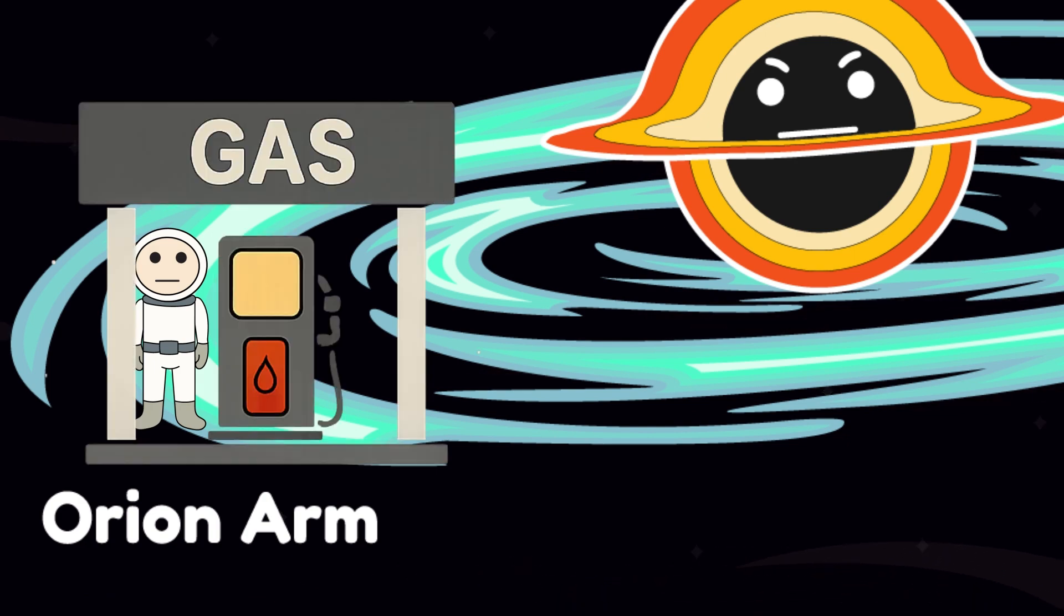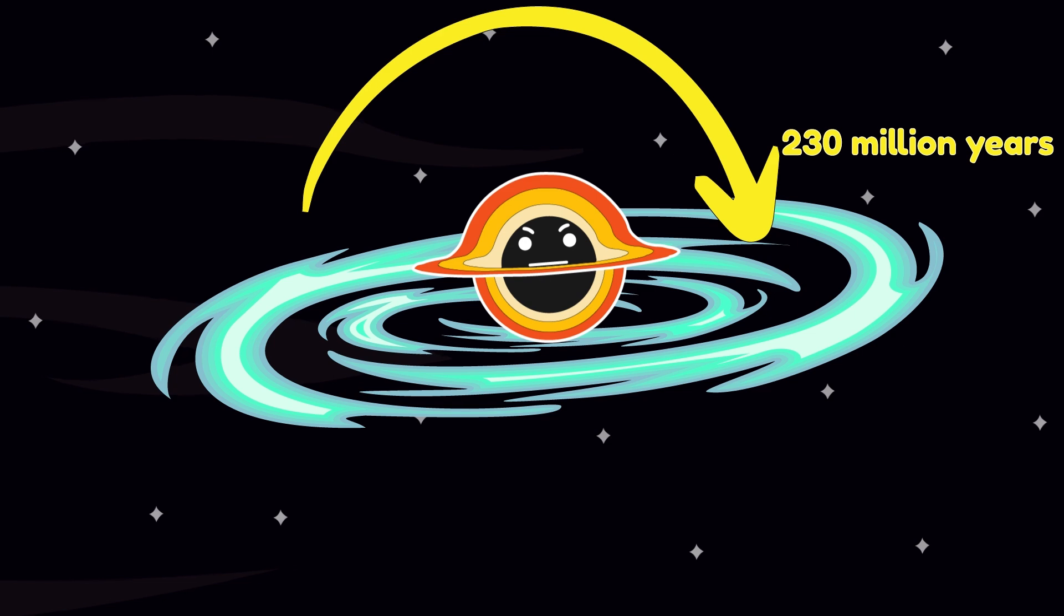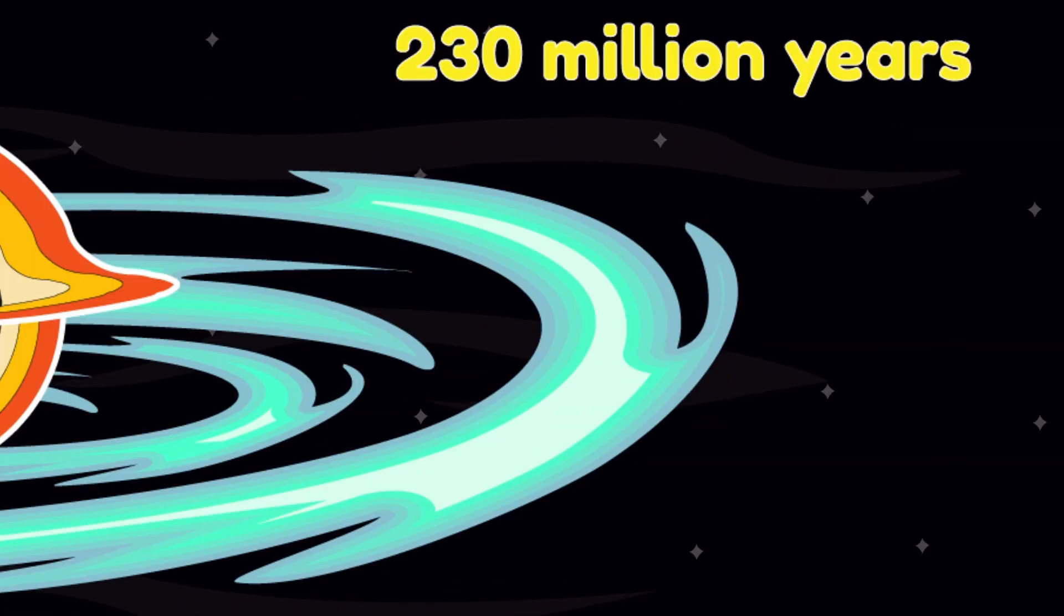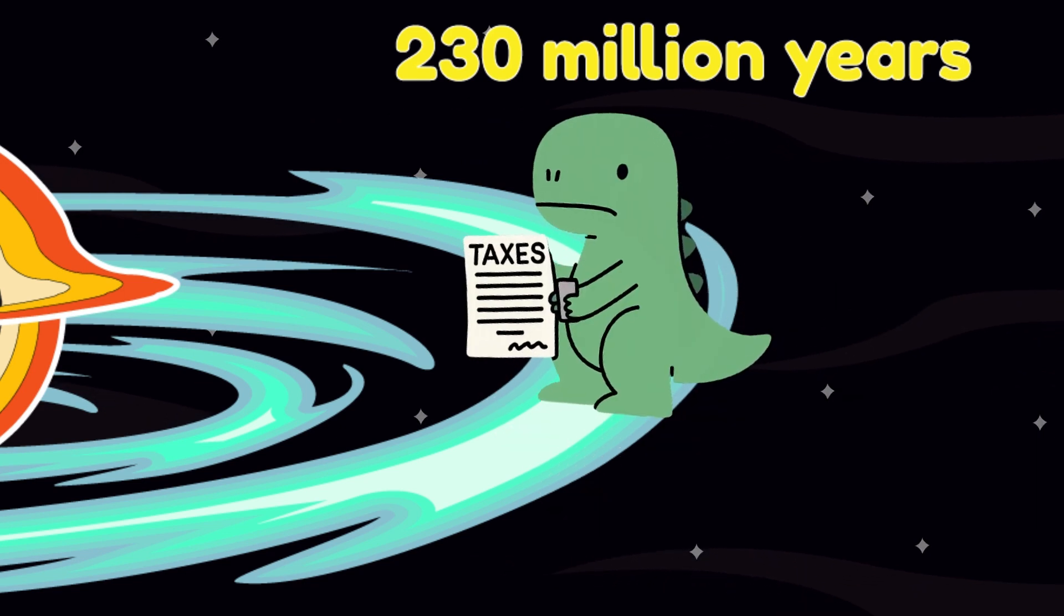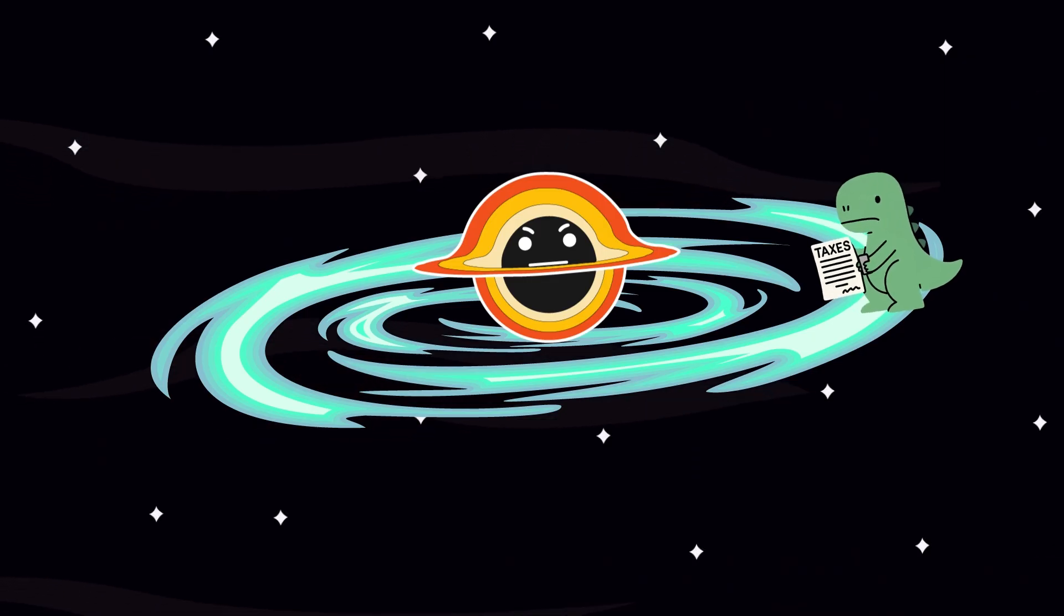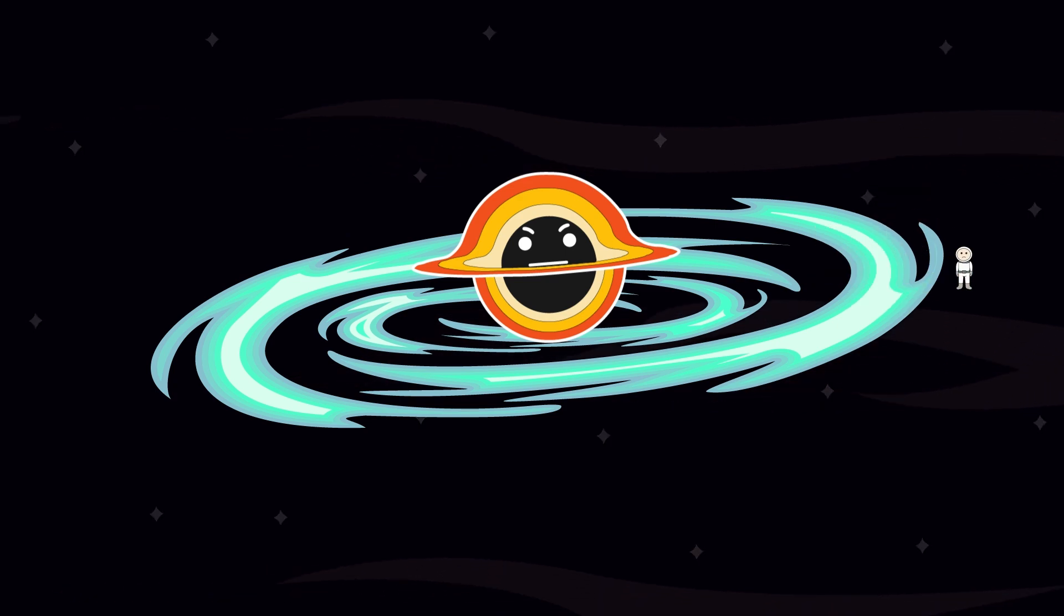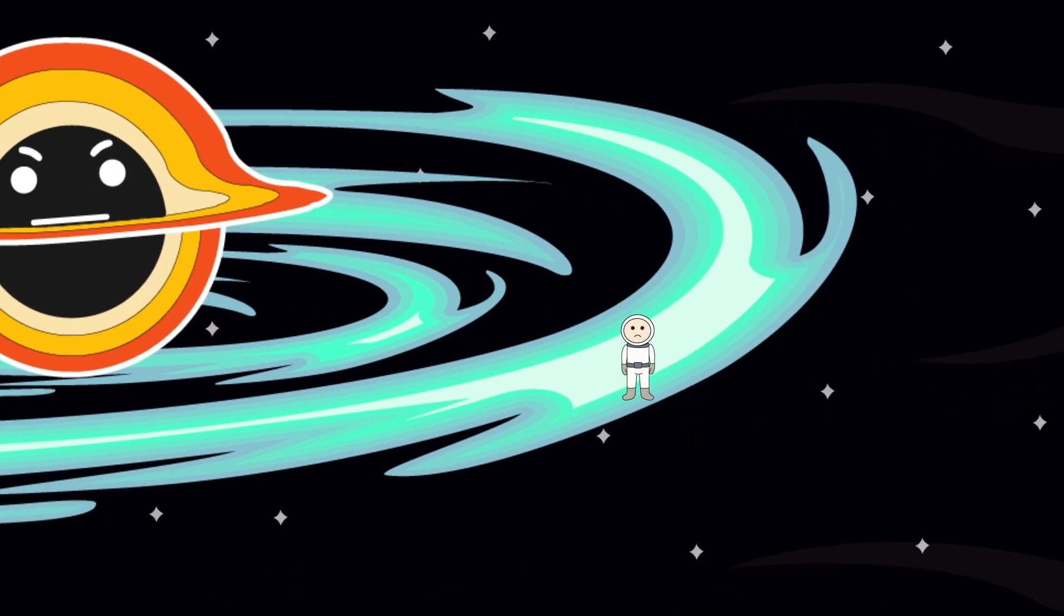Each rotation of the galaxy takes 230 million years. Meaning, last time your solar system was in this position, dinosaurs were still paying taxes. It's humbling and deeply insulting. You're one pixel in a trillion, circling nowhere special.